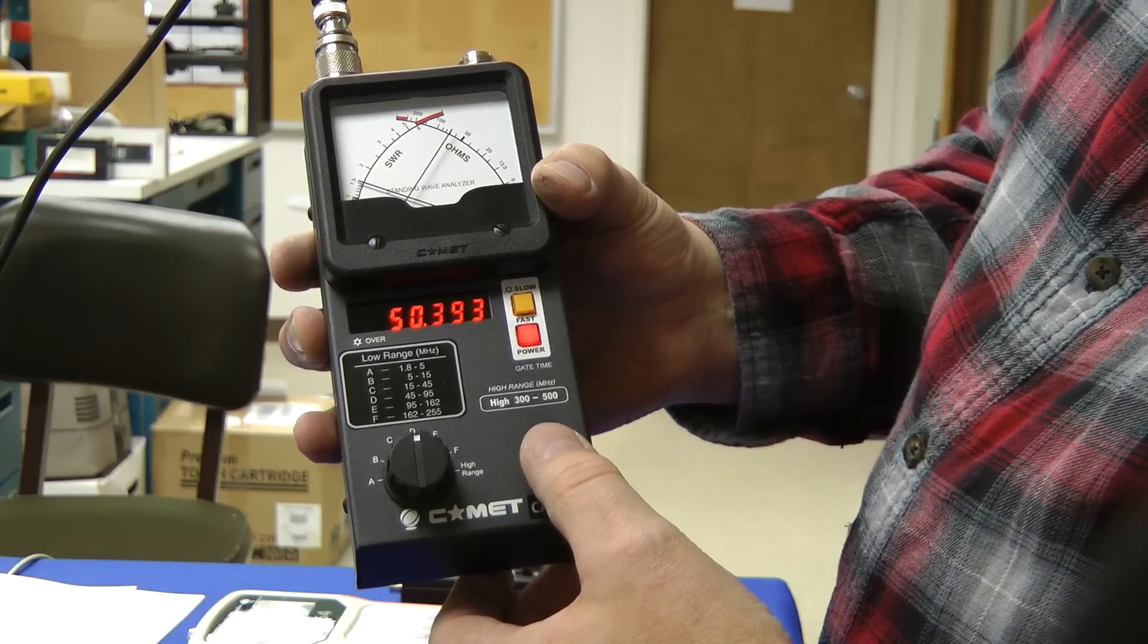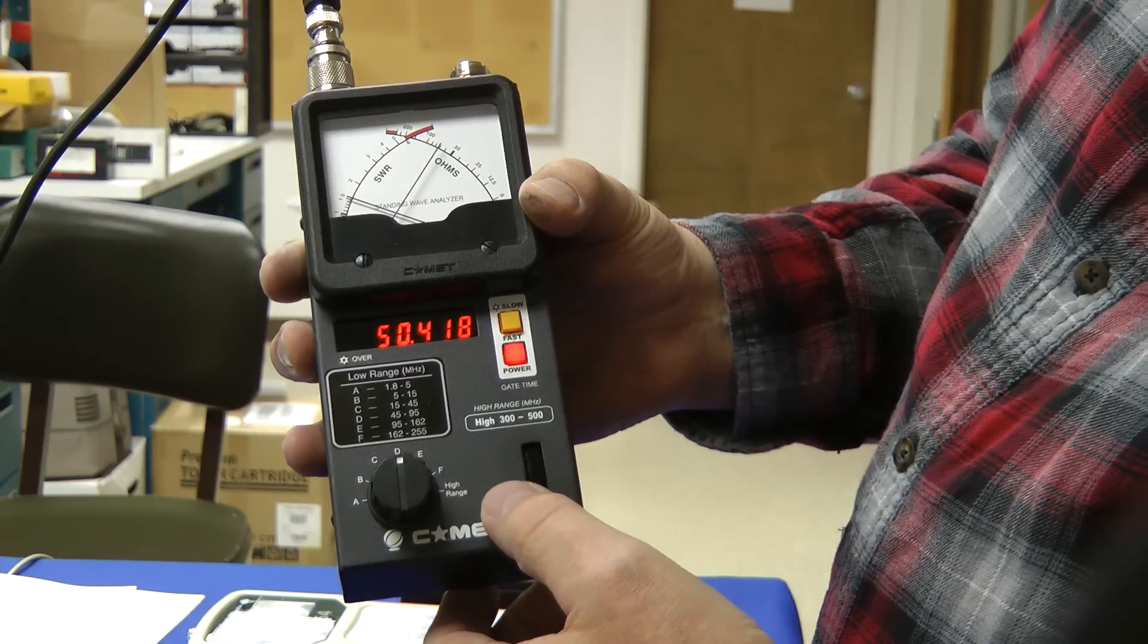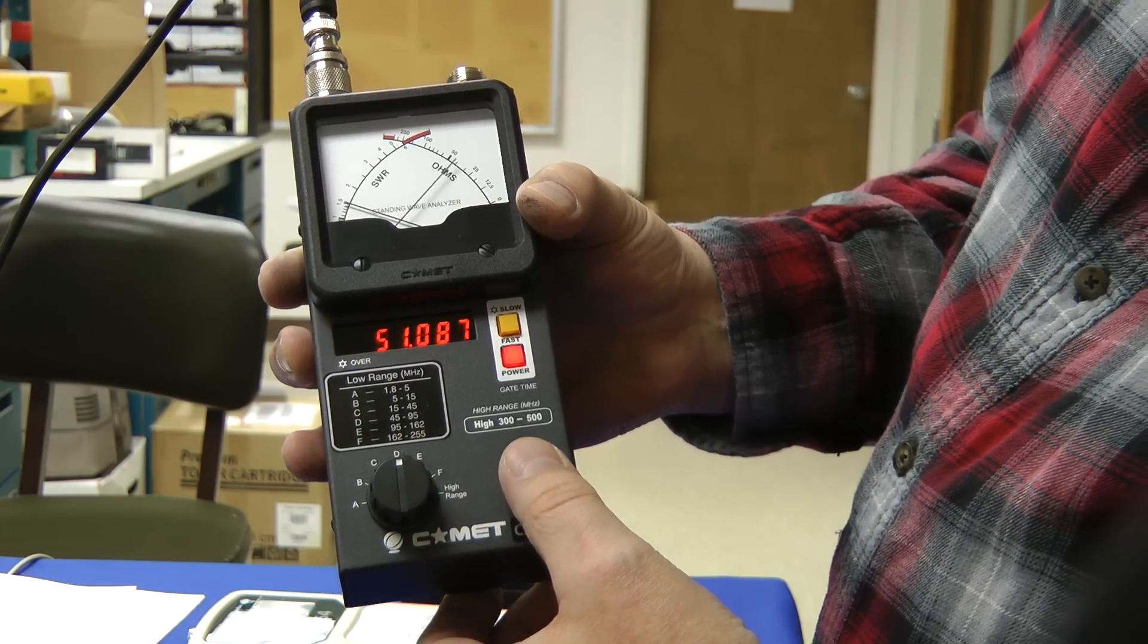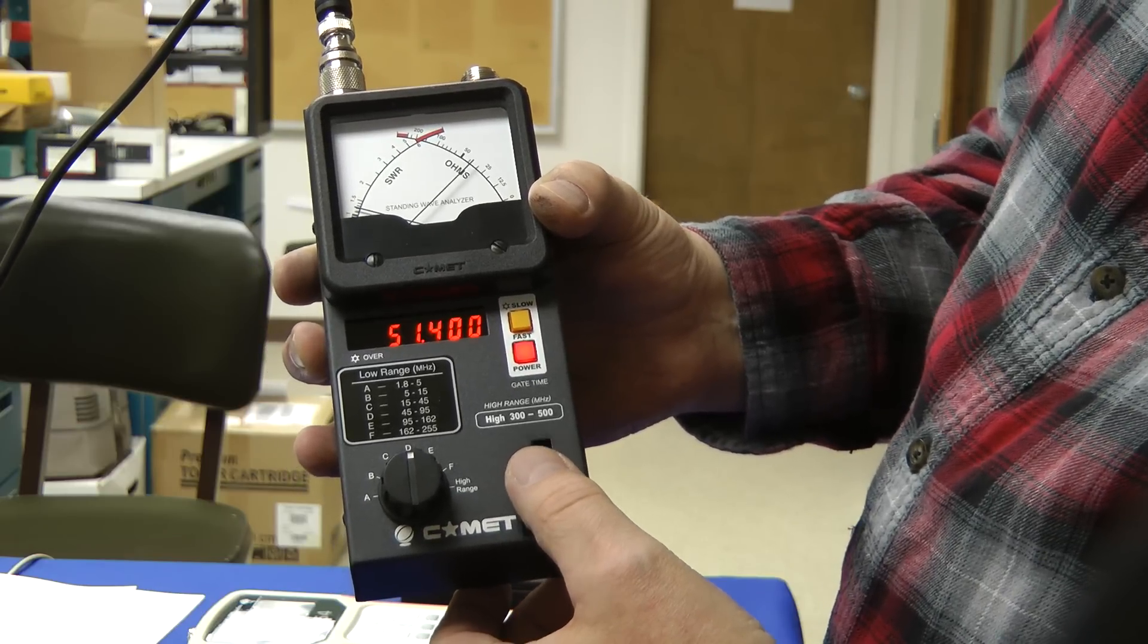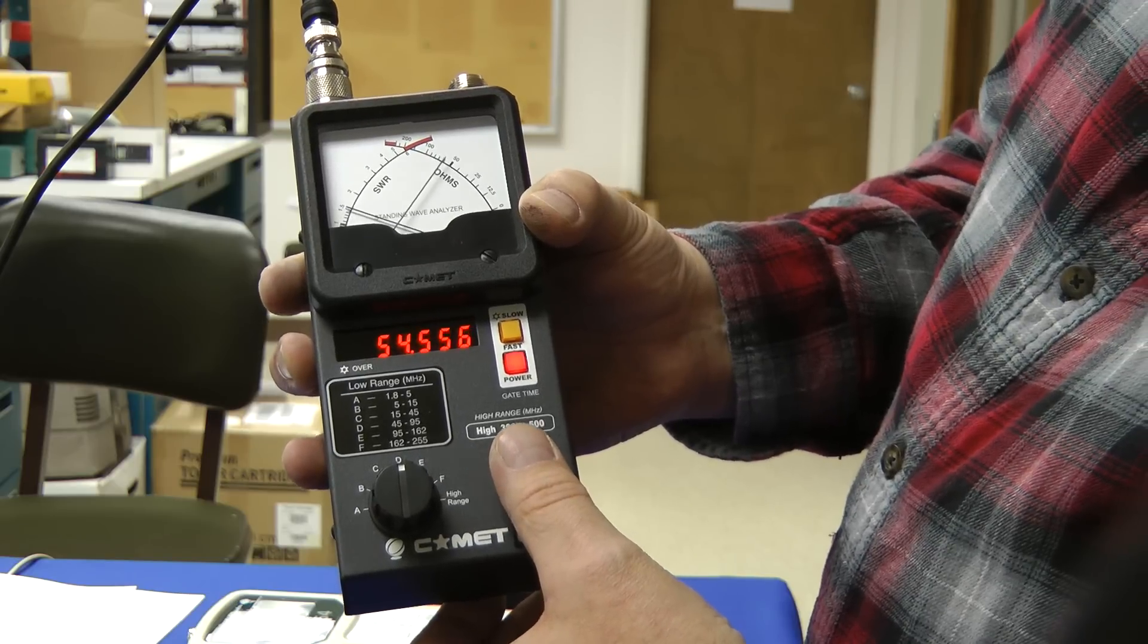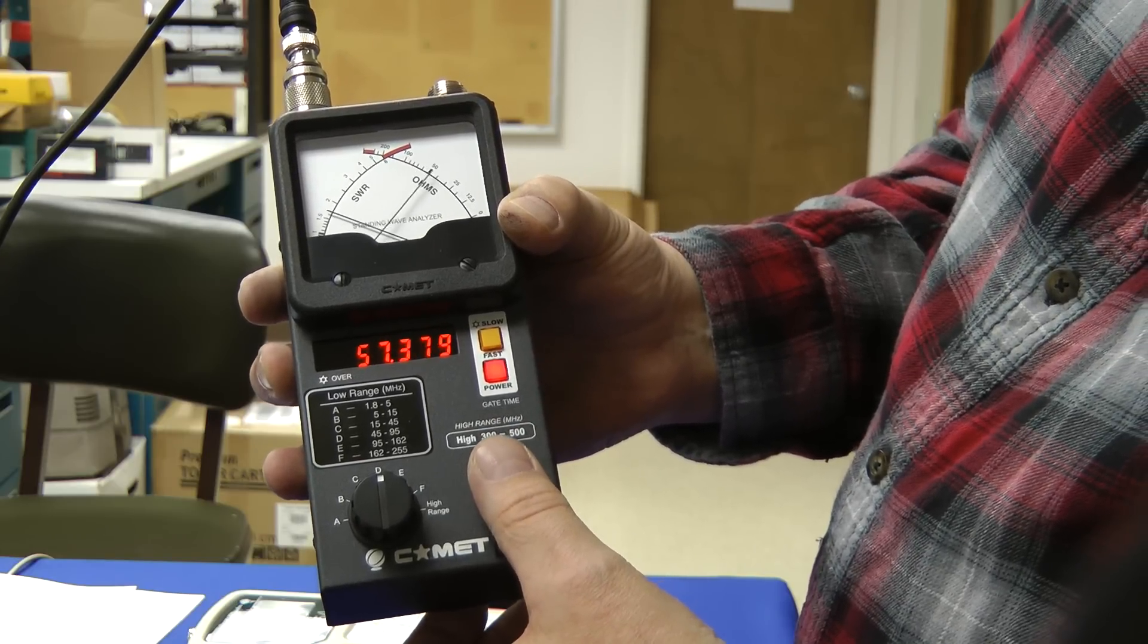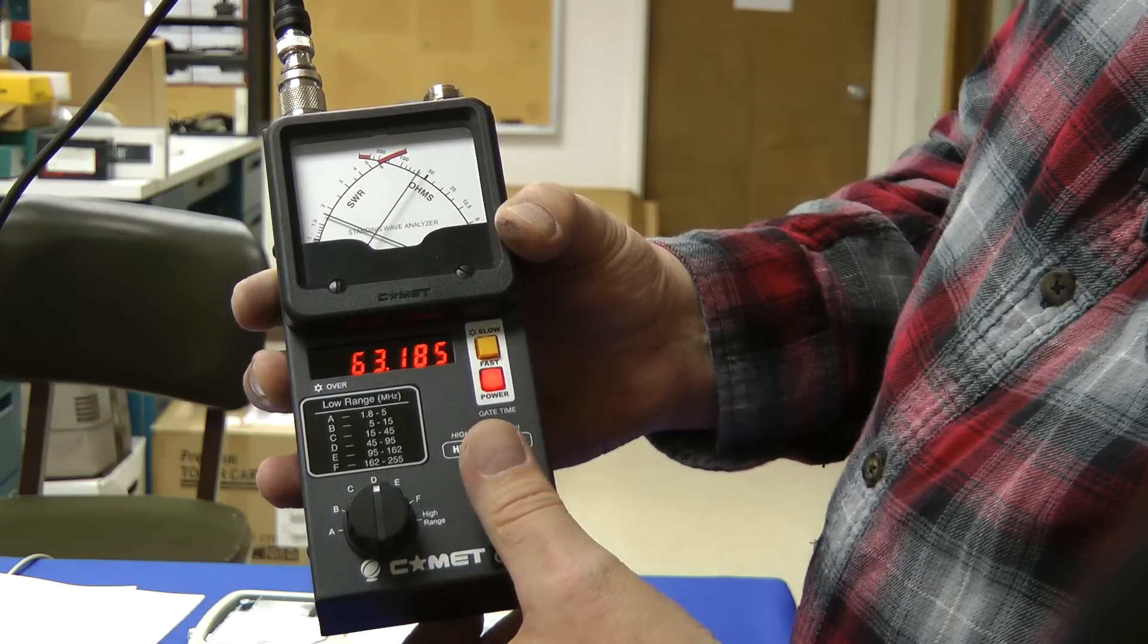Right now we're again on 50.4 megahertz. It's reading about what the other MFJ analyzer does. I can adjust the tuning knob. It dips down. It has a resonance of about 51.4. Let's see, dips again and again and again. Wow, this antenna is going all the way up to about 60 megahertz or more.